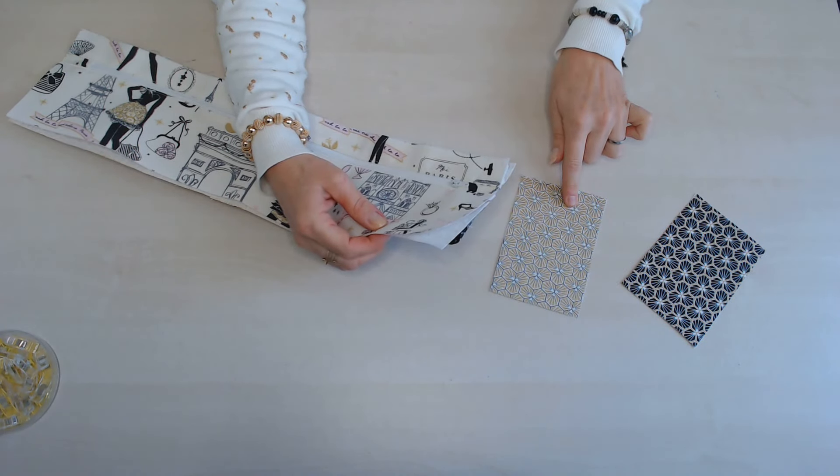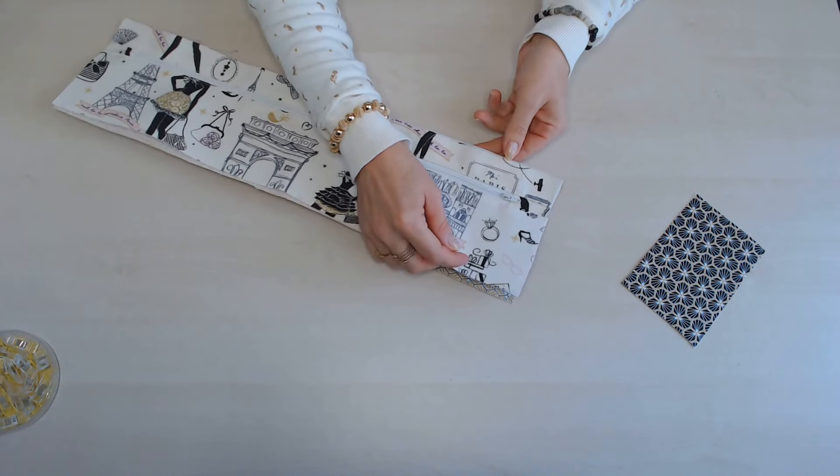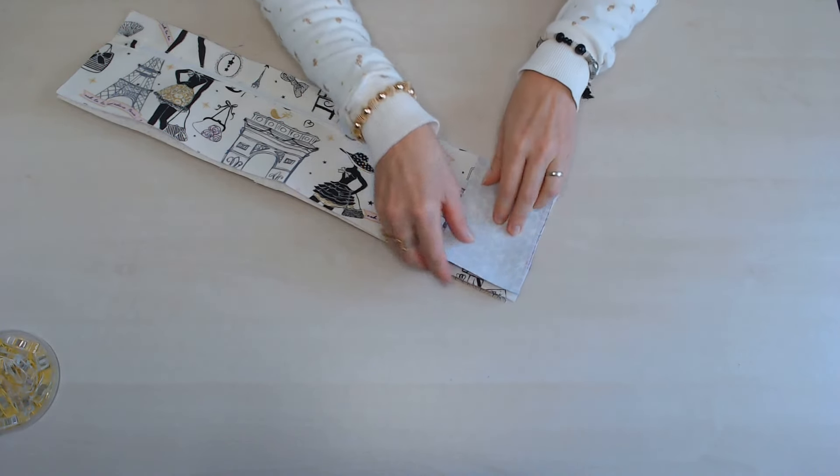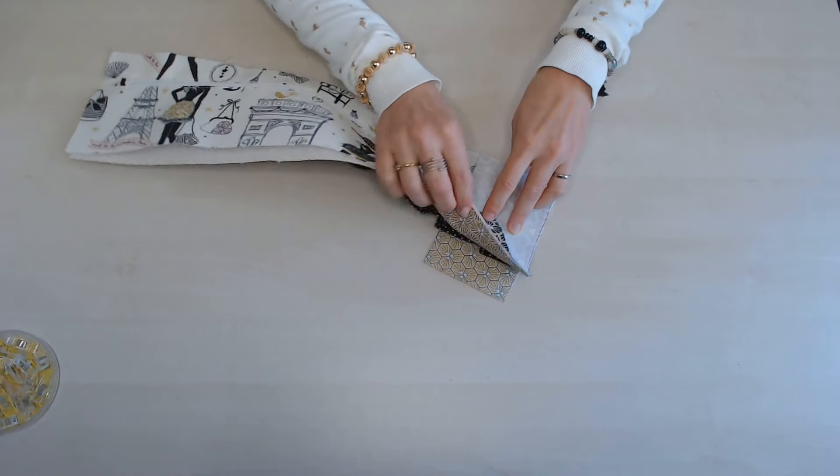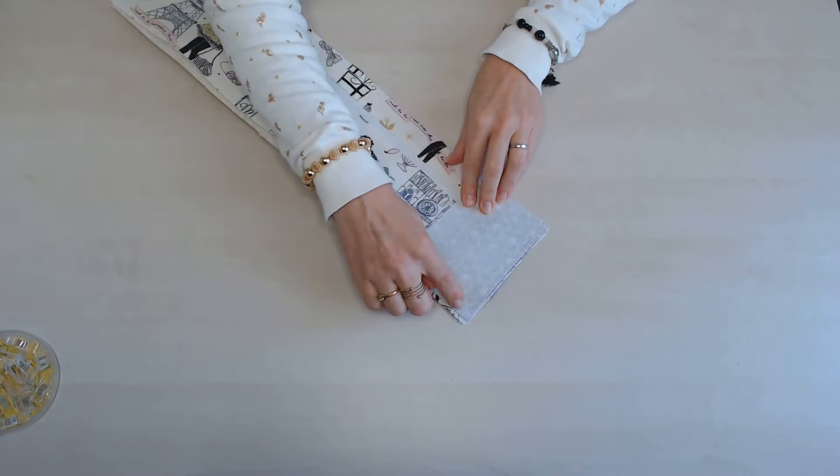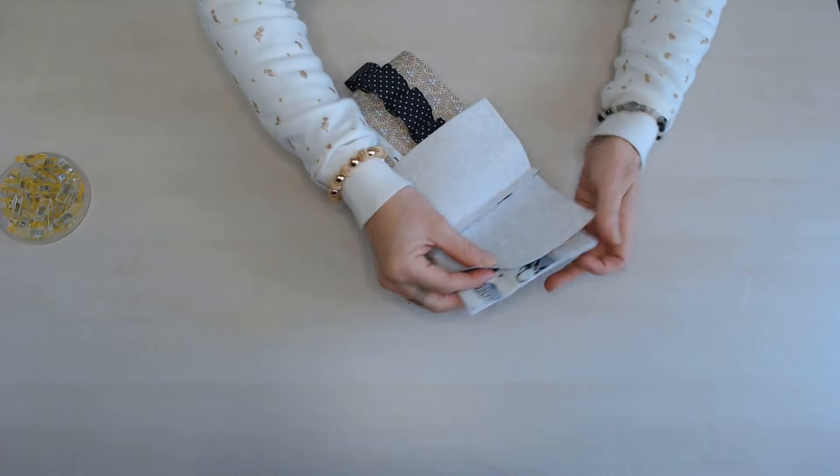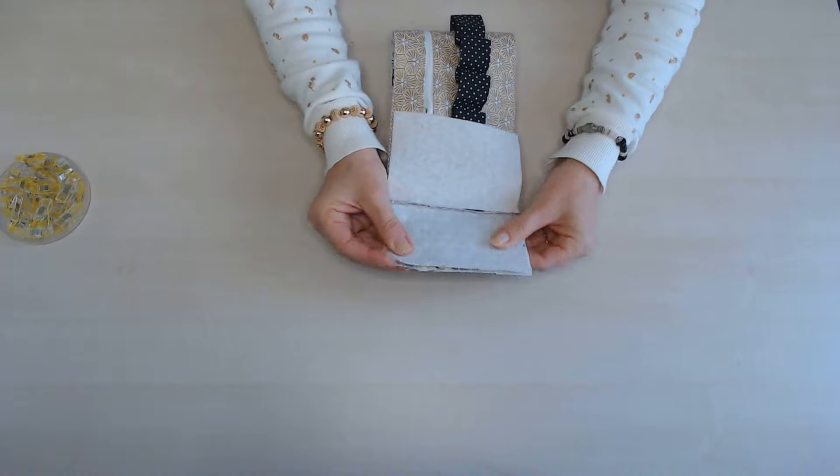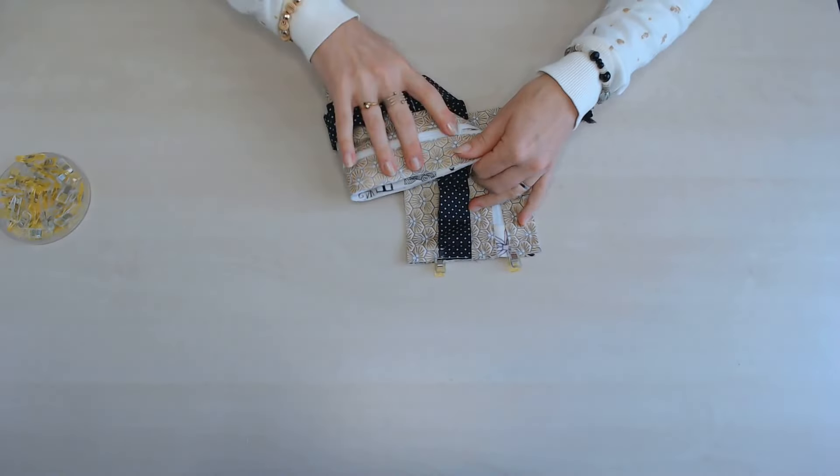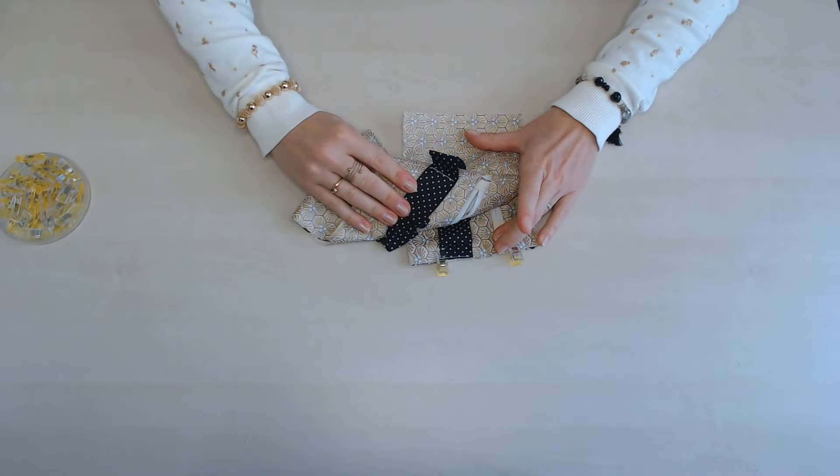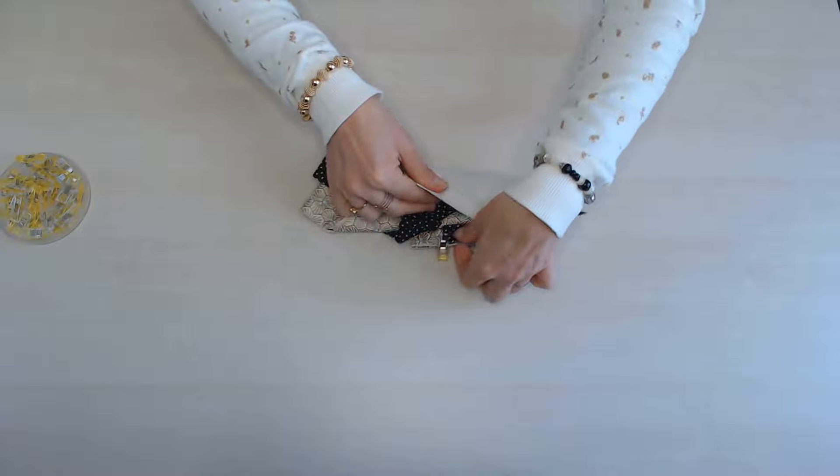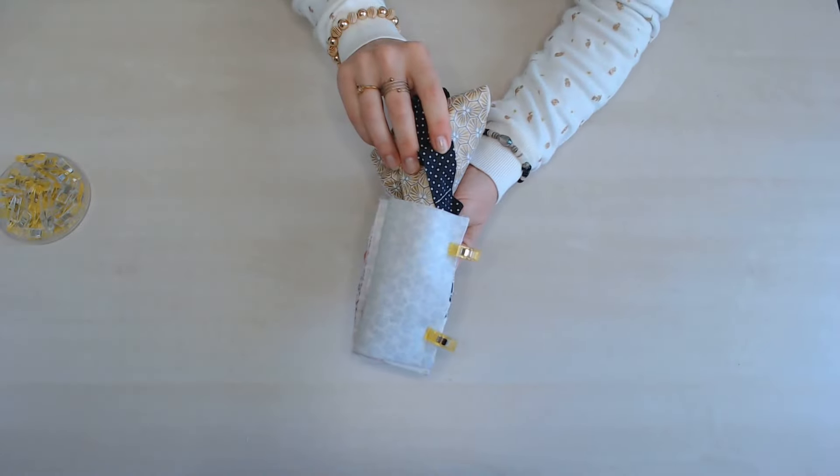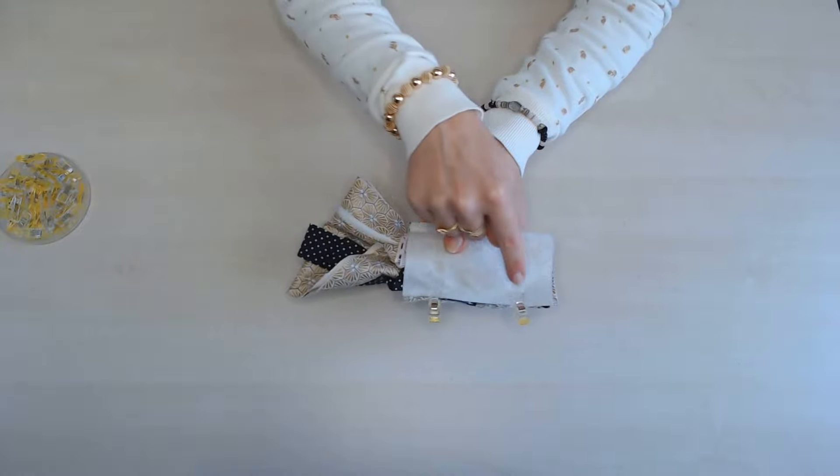On va assembler nos deux morceaux de 9 cm sur 13, donc on place celui qui va en dessous tissu endroit contre endroit et celui qui va au-dessus tissu endroit contre endroit. Ça donne ceci et ceci. Et on assemble sur la hauteur. On vient ensuite épingler la partie extérieure de notre rectangle avec l'extérieur du Vanity, comme ceci. On va repousser le corps du Vanity sur le côté et épingler la partie intérieure. Et vous obtenez ceci.